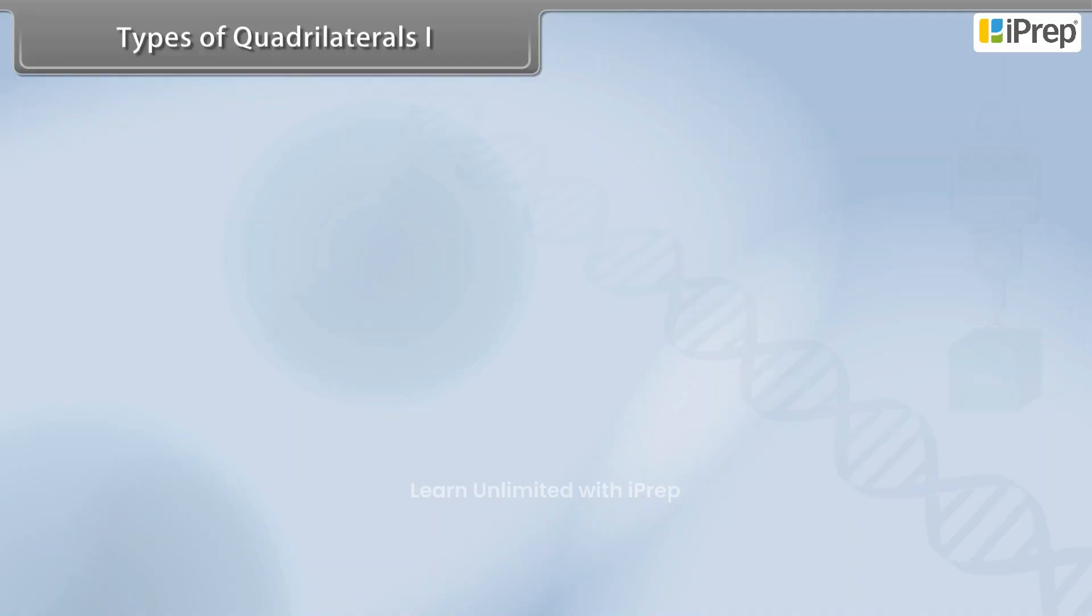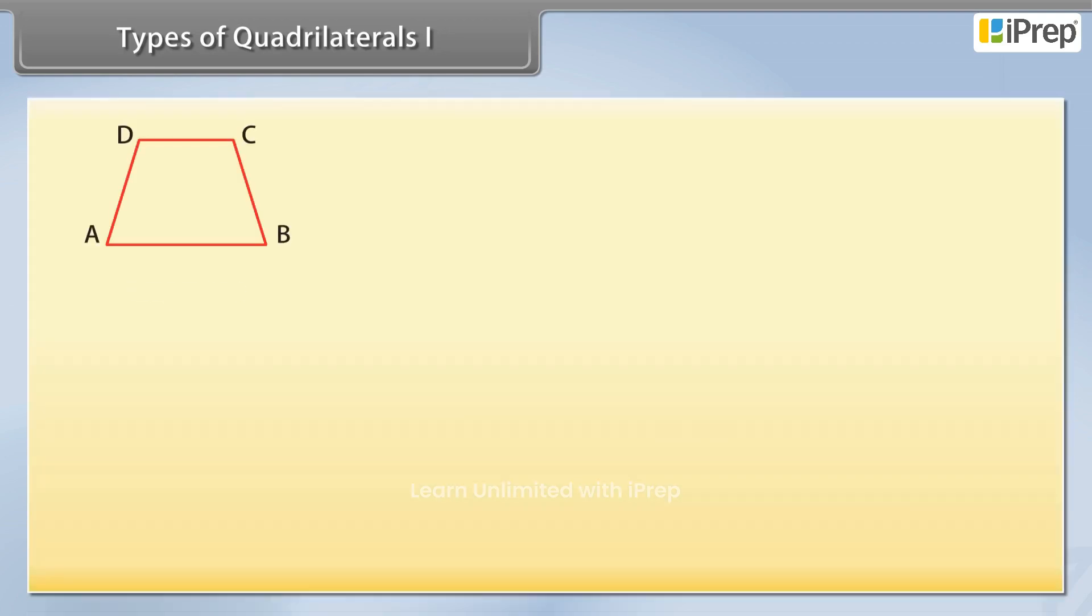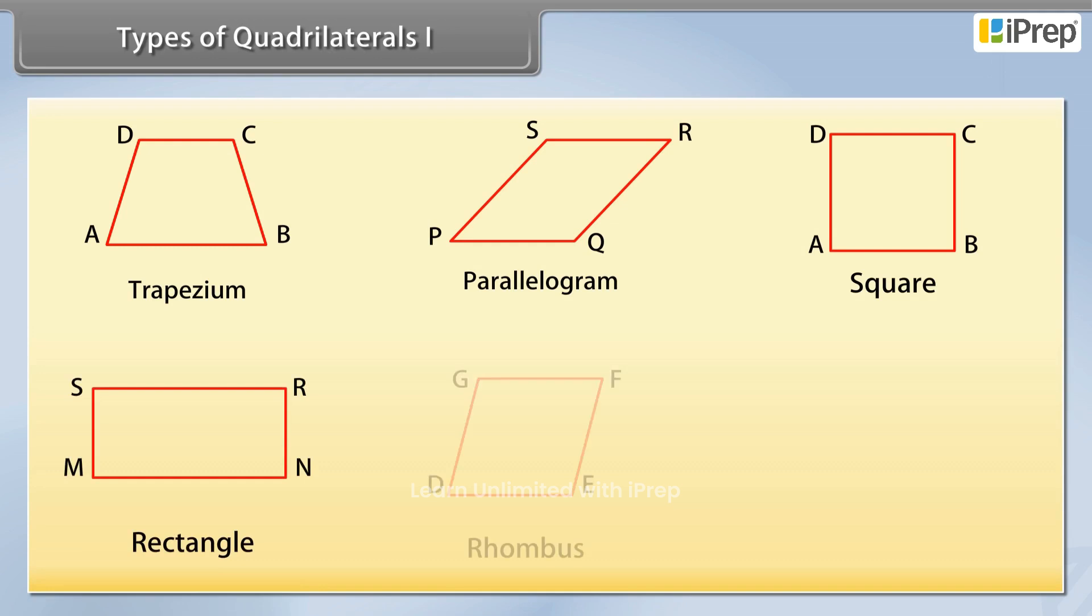Types of quadrilaterals 1. There are different types of quadrilaterals like trapezium, parallelogram, square, rectangle, rhombus and kite. Look at these figures. We will go through them one by one.